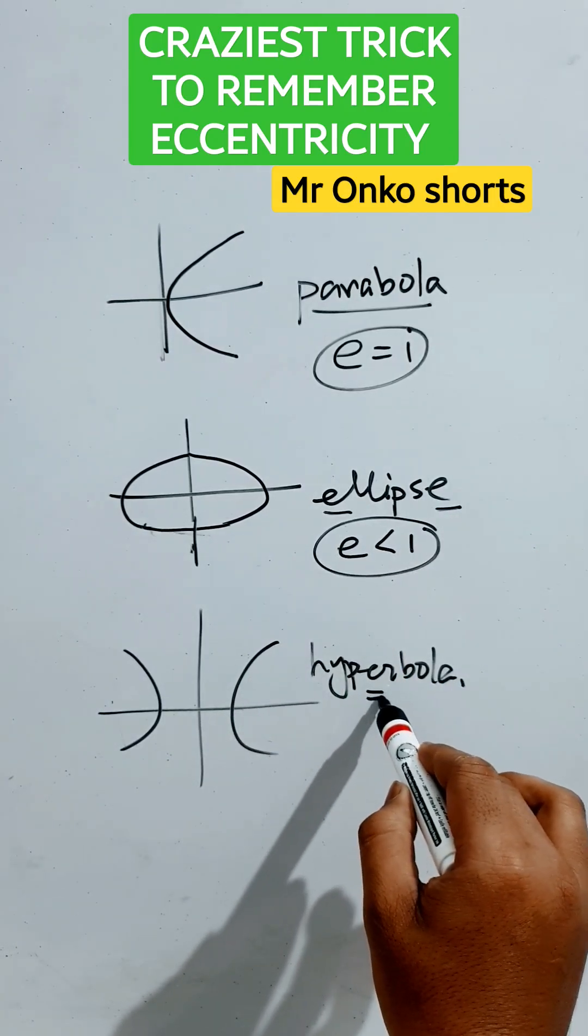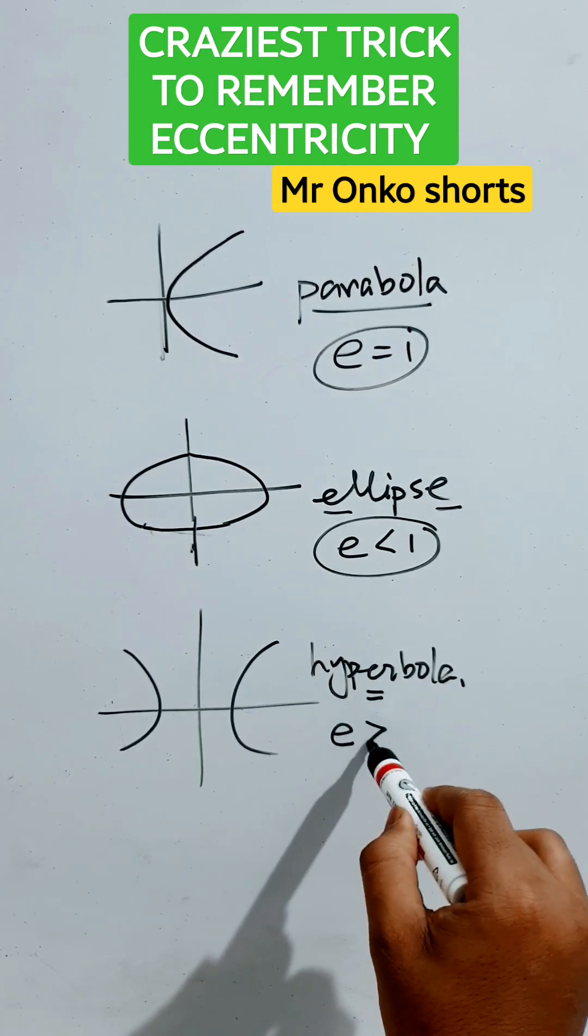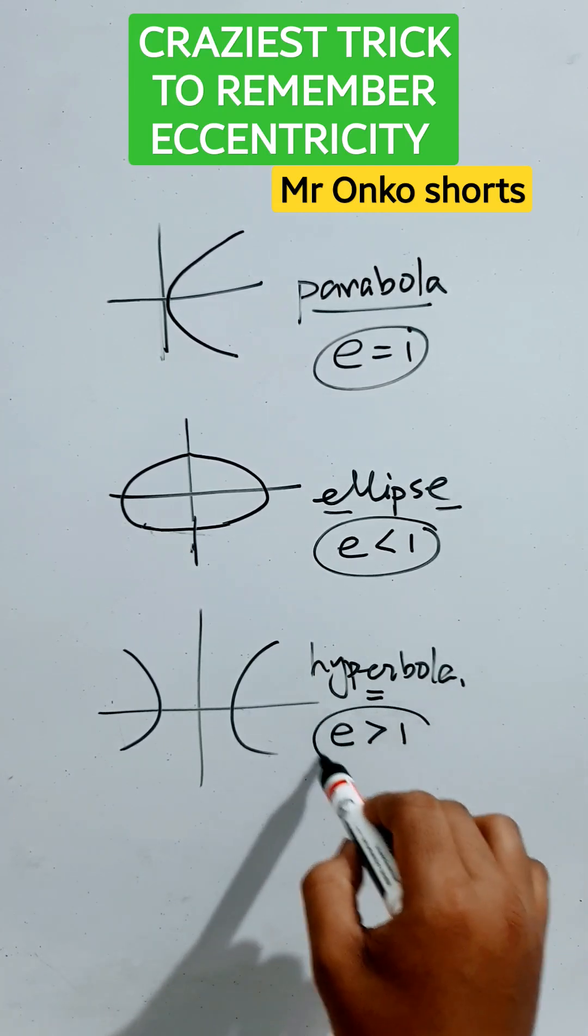And here, there's only one 'e'. Much more is required here, so you need to write eccentricity is greater than one. This is the trick.